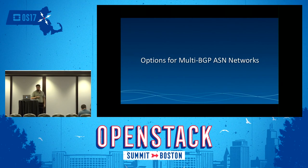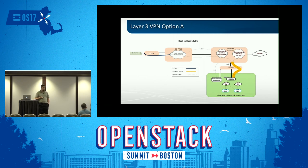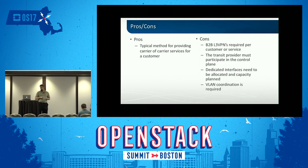Looking at options for dealing with multiple BGP ASs between our commercial and residential networks. The first option is Layer 3 VPN Option A, popular with telcos for carrier-of-carrier scenarios. You configure back-to-back L3 VPNs that don't know about each other except that they trade routes between the VPNs to attain connectivity. It is the typical method carriers use to allow other carriers across their network.